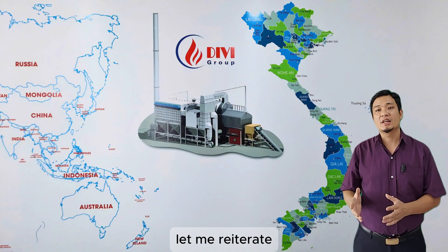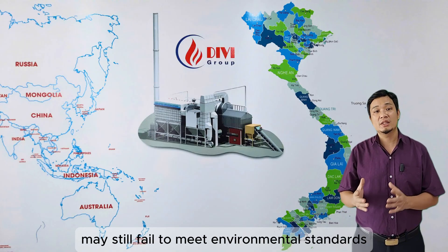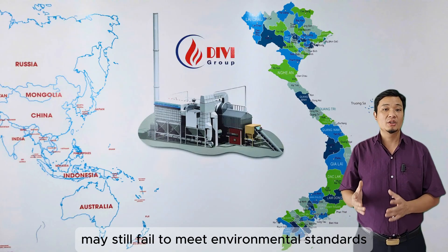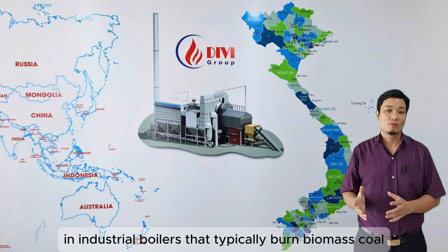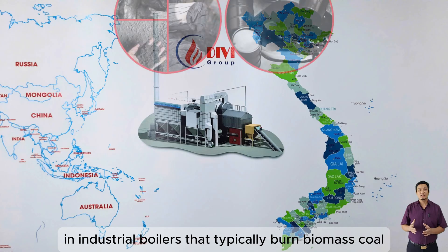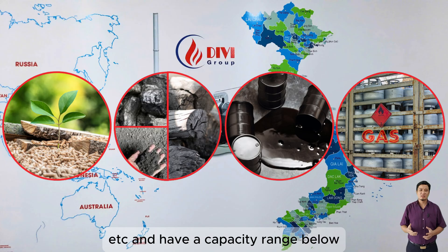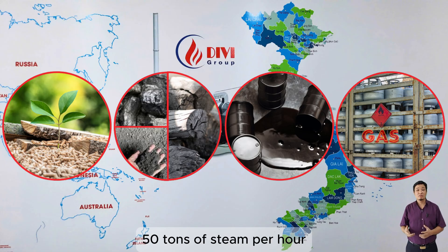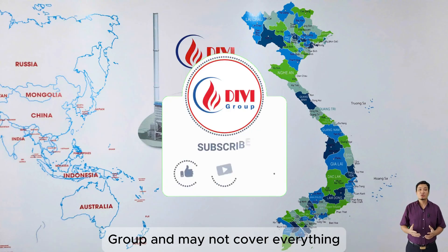Let me reiterate: a well-designed boiler that is improperly operated may still fail to meet environmental standards. We will analyze the emission issues in industrial boilers that typically burn biomass, coal, oil, gas, etc., and have a capacity range below 50 tons of steam per hour using saturated steam. This content is shared based on the experience of DV Group and may not cover everything.